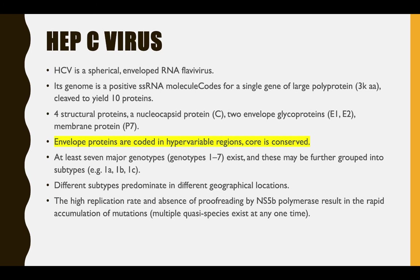Now moving to Hepatitis C virus. HCV is an RNA virus with envelope proteins coded in hyper-variable regions, while core proteins are in conserved regions. This means the outer envelope is more variable in composition while the core does not change — which helps for detection, as you look for conserved areas to confirm HCV. There are seven genotypes, each with their own subtypes. High replication rate, absence of proofreading by the RNA polymerase, results in rapid mutations.